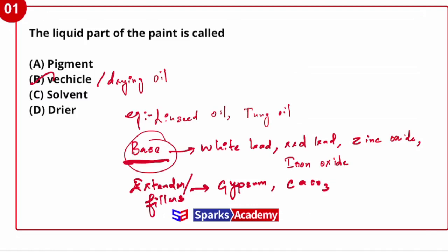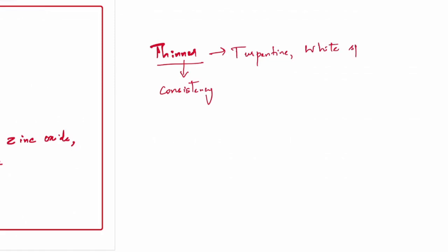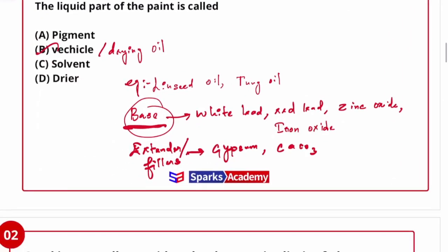Thinners are used to improve the consistency of the paint. Examples include turpentine and white spirit. Paint questions are very important — please do cover it because questions repeat in JDUO. Next question: sand is generally considered to have a size limit of?